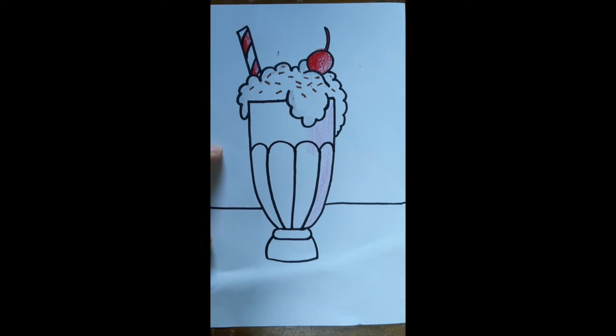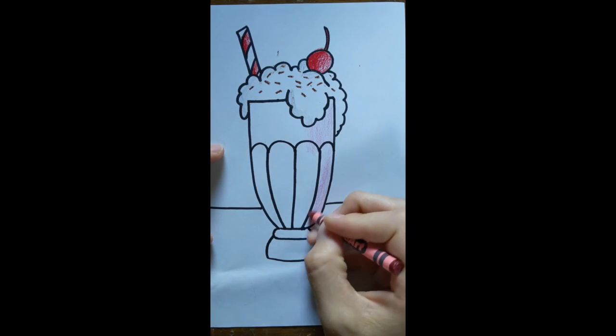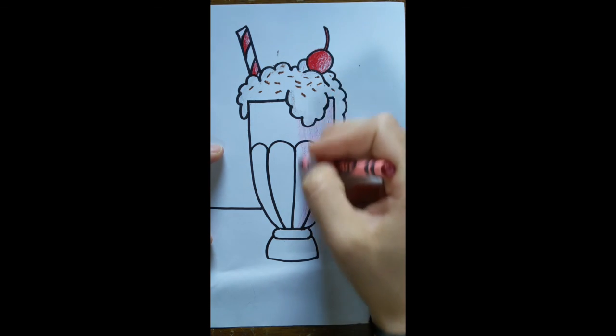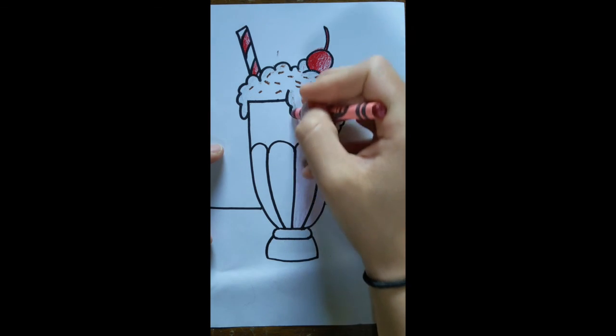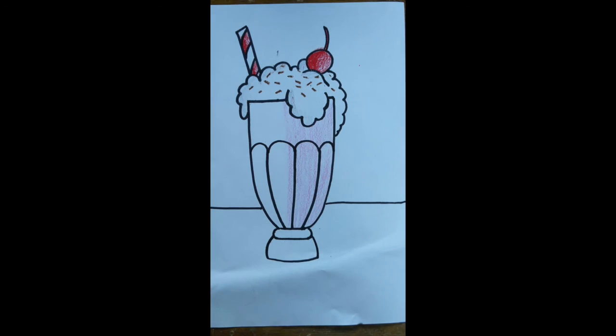What I might do is add some shadow on the bottom part of the glass using my silver again. Just to make some glass shadows. Because I know when you look at a glass, sometimes you can see little reflections. Sometimes you can see things poking through.